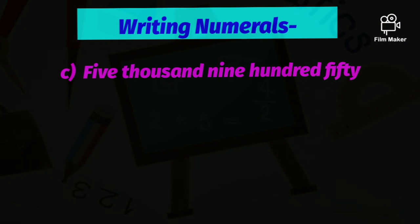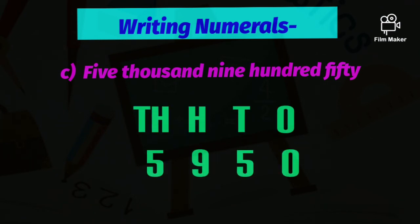Next, the number name is five thousand nine hundred fifty. Five goes in the thousands place, nine goes in the hundreds place, five goes in the tens place, and zero goes in the ones place. The numeral becomes 5950.